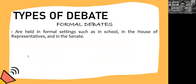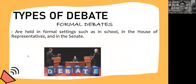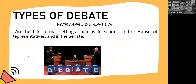These are the types of debate. Formal debates are held in a formal setting, such as in school, in the House of Representatives, and in the Senate. Debaters come prepared, equipped with the knowledge they need to be able to reason out effectively. A topic is debated upon, and the debaters listen to the arguments raised by the other debaters, from which they build their arguments and argue their position.